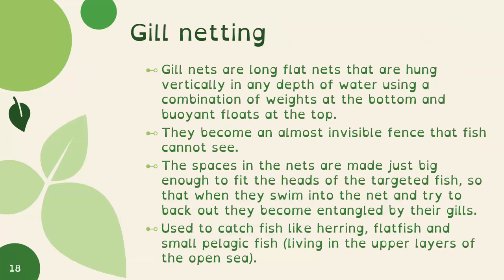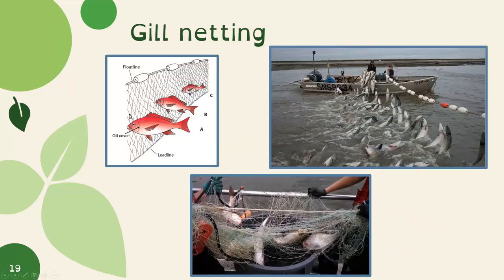Gill nets are hung vertically using a combination of weights at the bottom and buoyant floats at the top — they become an almost invisible fence. The spaces are made just big enough to fit the heads of targeted fish so that when they swim in and try to back out, they become entangled by their gills. They're used to catch herring, flat fish, and small pelagic fish living in the upper layers of the open sea. Here you can see a close-up diagram and real-life images of people pulling in gill lines with fish caught in them.